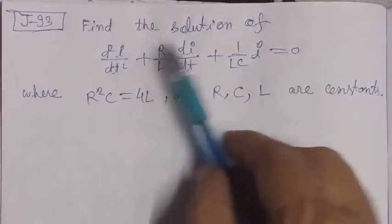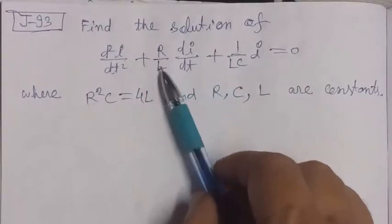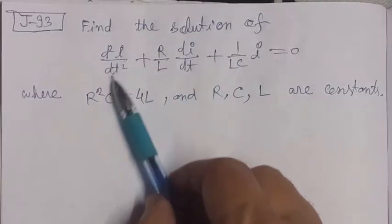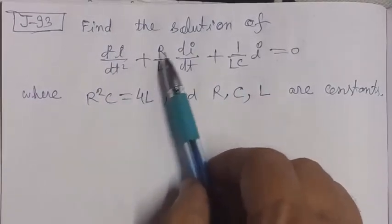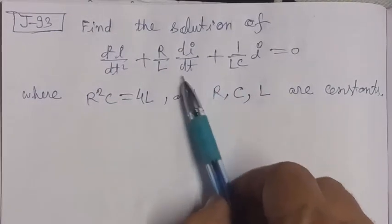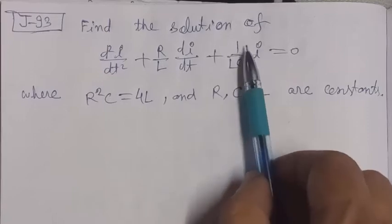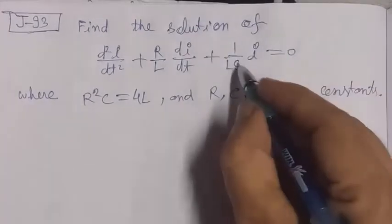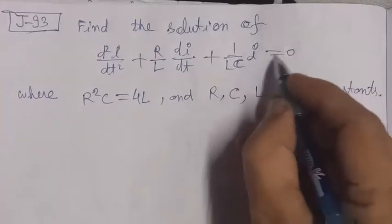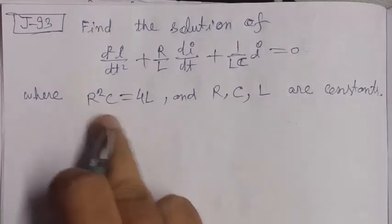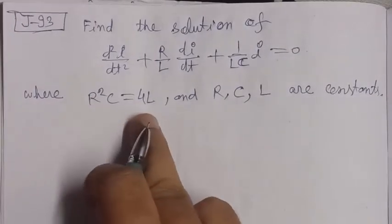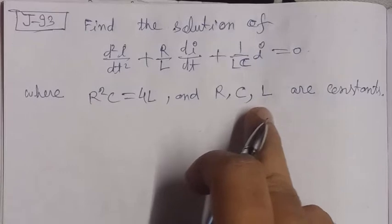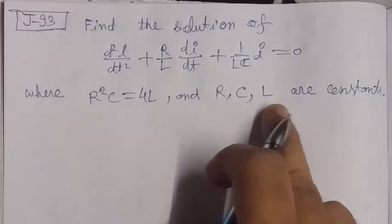Find the solution of d²i/dt² + (R/L)·di/dt + (1/LC)·i = 0, where R²C = 4L, and R, C, L are constants.